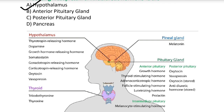Pancreas body का एक vital organ है जो stomach के पास situated होता है. इसके तीन भाग होते हैं: head, body, tail — head right side abdomen में, tail left side abdomen में. यह 15 cm long होता है और दो तरह के secretions produce करता है: hormones (जैसे insulin, somatostatin) और enzymes (जैसे trypsin, amylase).